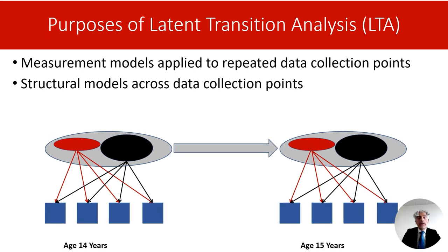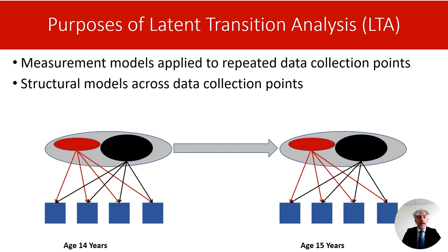Once I have identified the categories of participants at each age, my question is how adolescents move from one category to another across time, or if they move at all. For example, what is the probability that an abstainer at 14 years of age will become a substance user at 15 years? And what can affect this probability? For example, are males more likely to move from being abstainers at 14 to becoming substance users at 15? Latent transition analysis allows us to answer all these questions using probability methods, and therefore provides transparent and robust formal methods for answering questions about individual change over time.